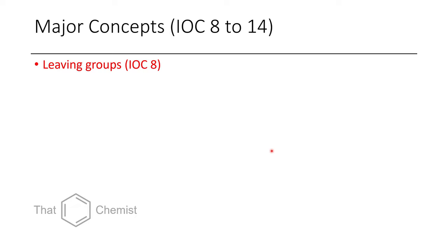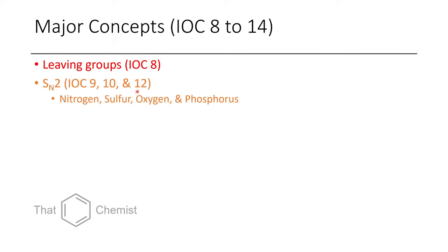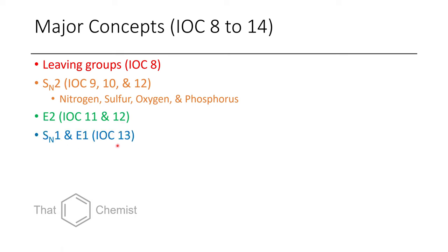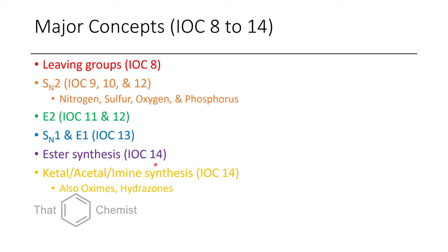The next set of main concepts are from lectures 8 to 14. In lecture 8, we talk about leaving groups, which can often be displaced or eliminated. In lectures 9, 10, and 12, we talk about substitution reactions — specifically SN2 reactions on nitrogen, sulfur, oxygen, and phosphorus, as well as cyanide. We have E2 reactions in lectures 11 and 12. SN1 and E1 are discussed in lecture 13. The synthesis of esters is in lecture 14, and also in lecture 14 we talk about the formation of ketals, acetals, and imines.